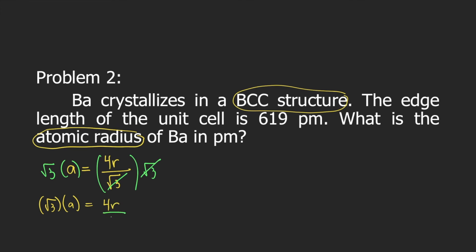Next is you divide both sides by 4. So 4 will cancel on the right side. And your equation becomes square root of 3 times a divided by 4 is equal to r.